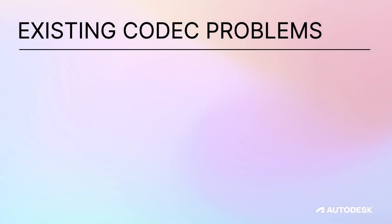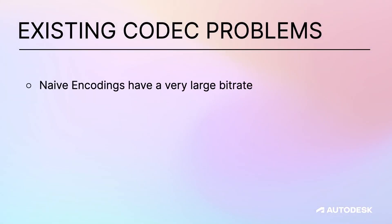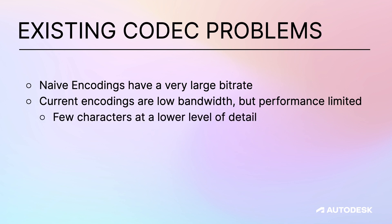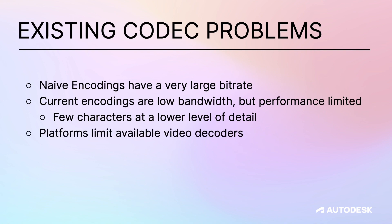Of the current codecs, naive encodings have a very large bitrate and typically can't be read and rendered in real time, and in many cases have to be kept in memory during runtime instead of streaming from disk due to IO limits — also limiting the total length and number of clips which can be played. Current generation encodings make great use of bandwidth and disk space, but they're performance-limited owing to a compression strategy that needs to be decoded serially. They also rely on hardware video decoders, which have per-platform limits and introduce synchronization challenges.